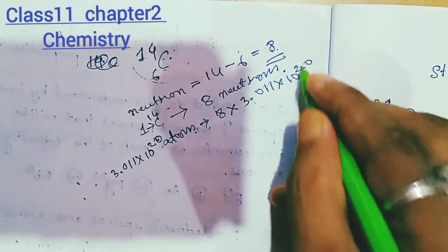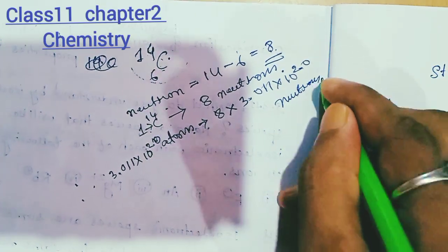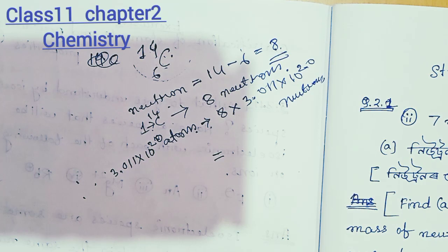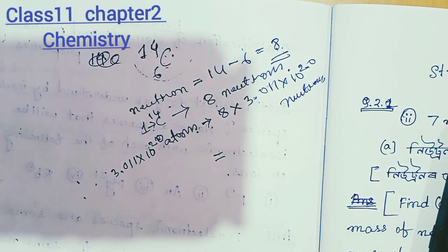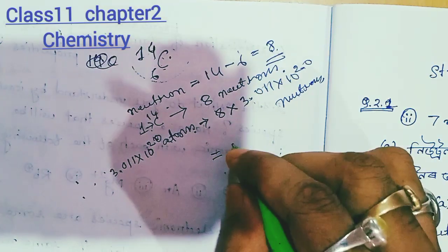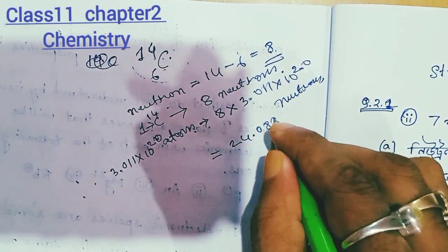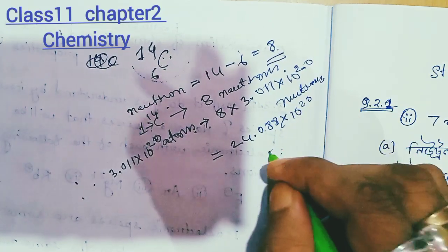So we have 3.011 × 10²⁰ atoms, and each has 8 neutrons. Therefore, the total number of neutrons is 24.088 × 10²⁰ neutrons.